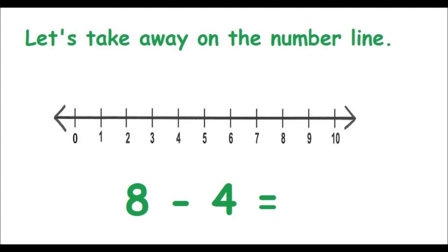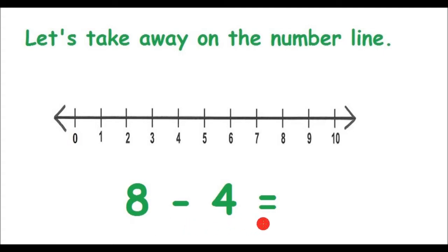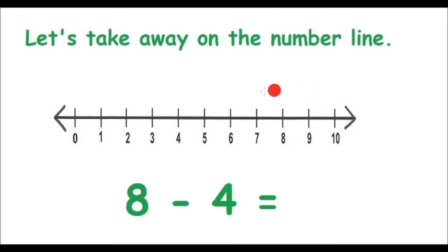Let's read our number sentence. 8 take away 4 is equal to something. Because we are going to take away, we will use our number line going backwards — in other words, in this direction.